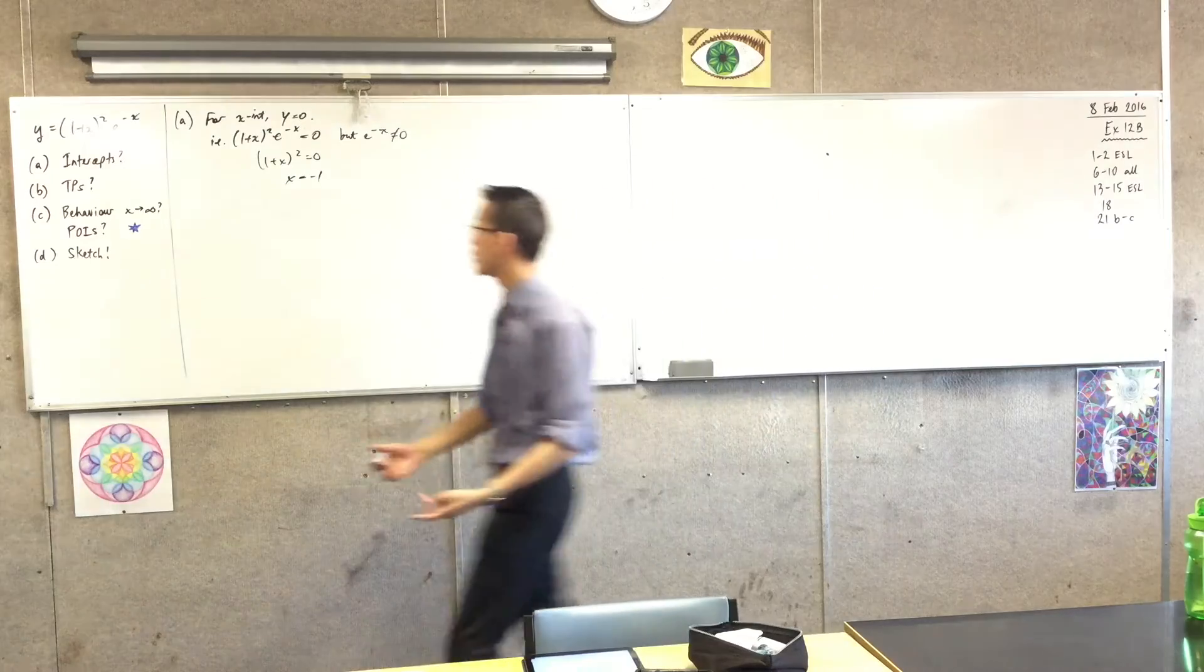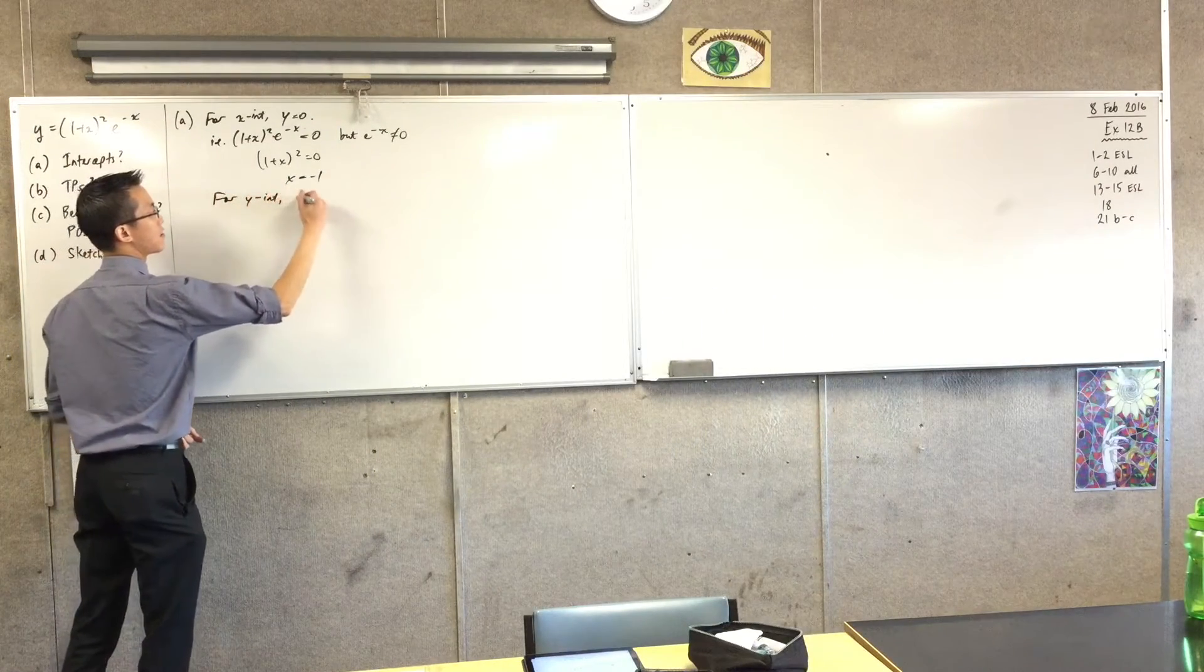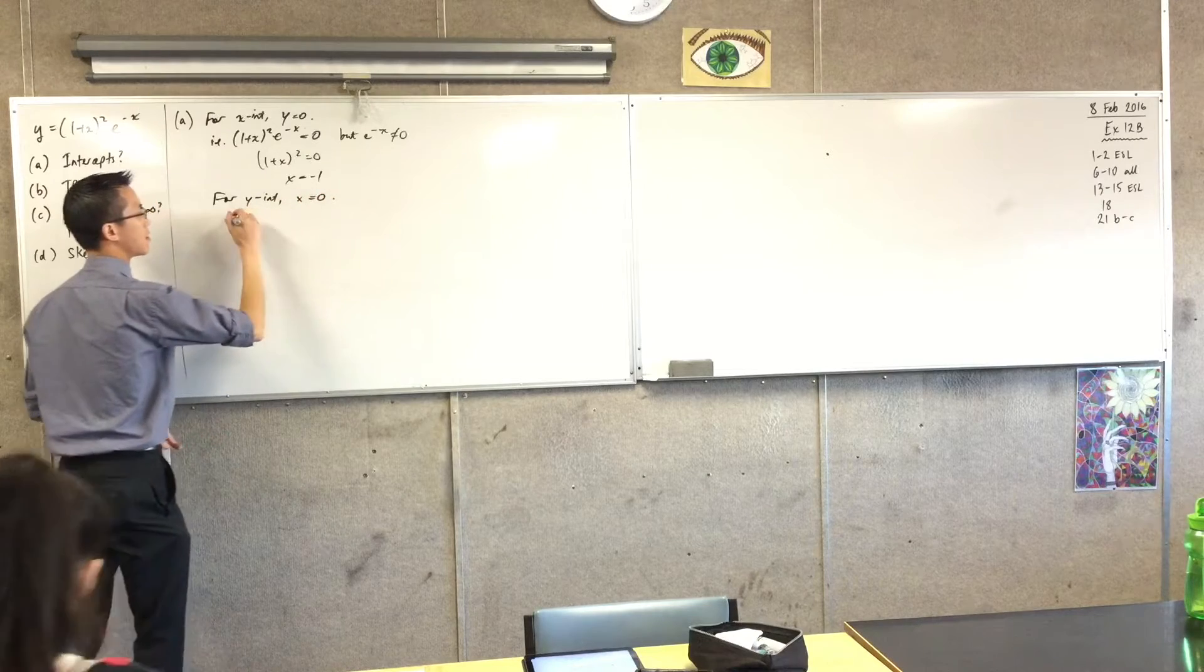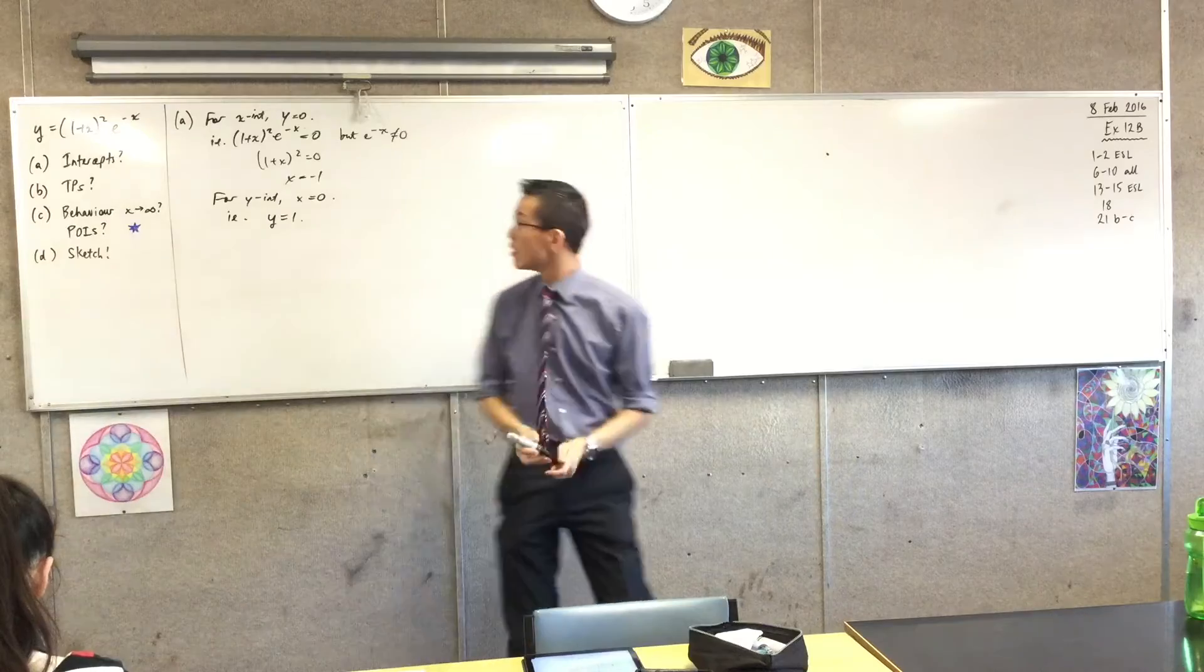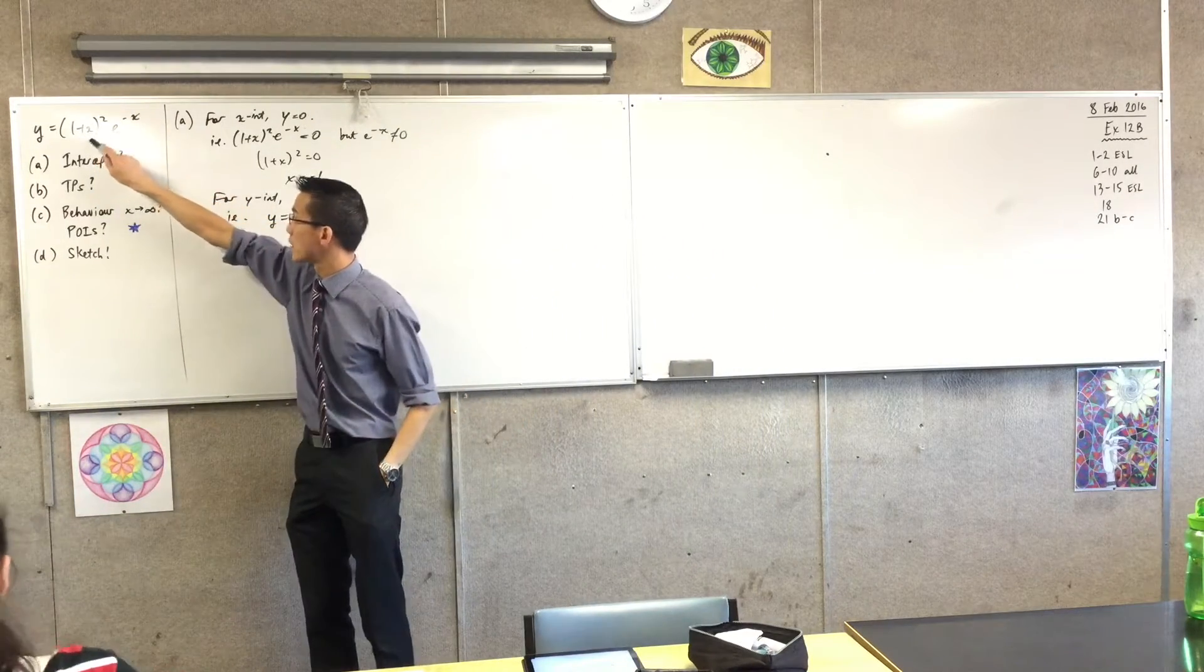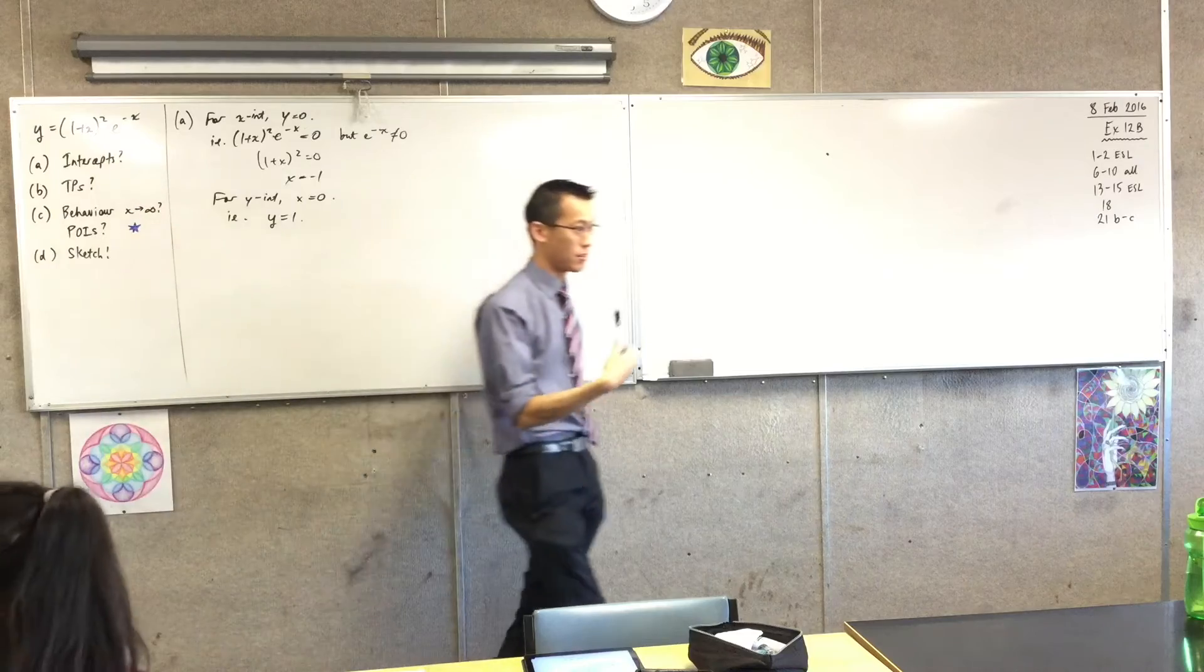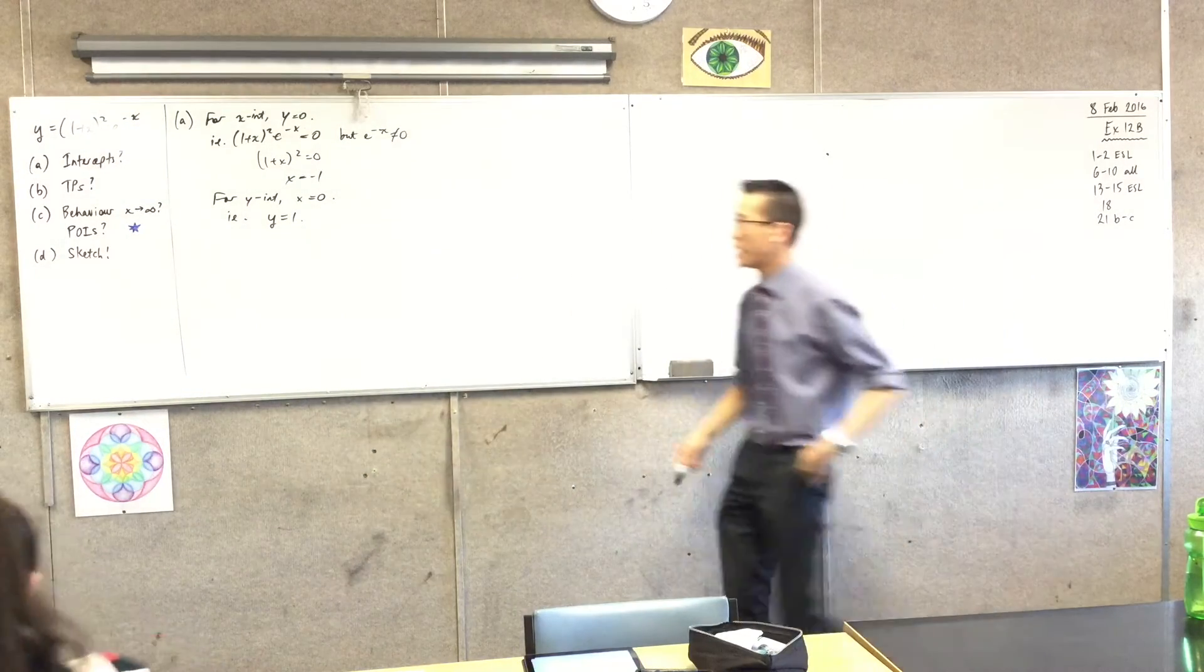So now I have an x intercept, no problem. I'm going to save you a bit of time because I think you know what to do here. For the y-intercept, let x equal 0, and you're going to get, from memory, y equals 1. You pop that in. You're going to have a look at that. (1 + 0)² times e^0, which is 1. It all comes out.